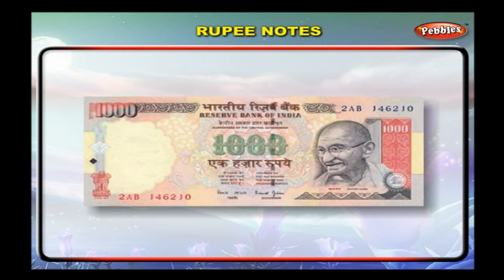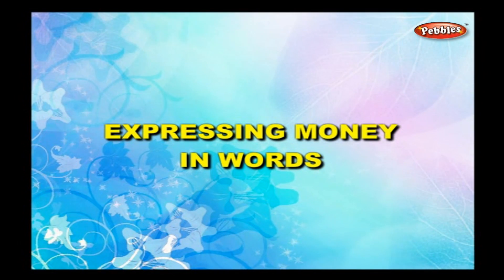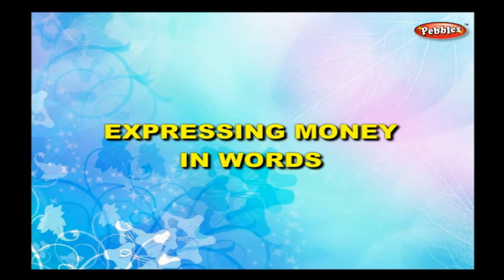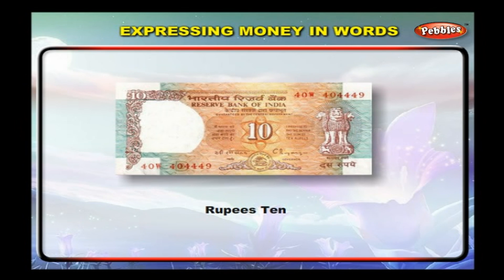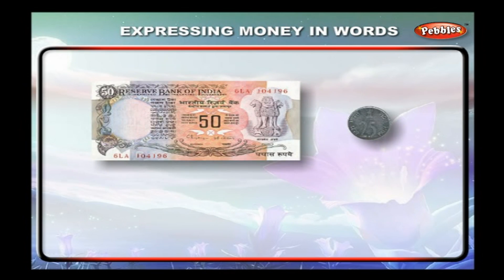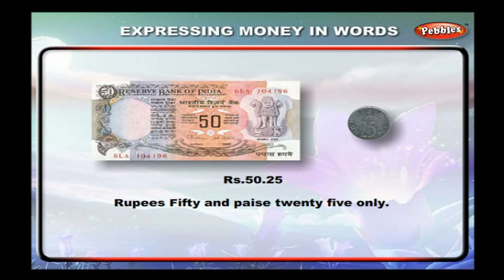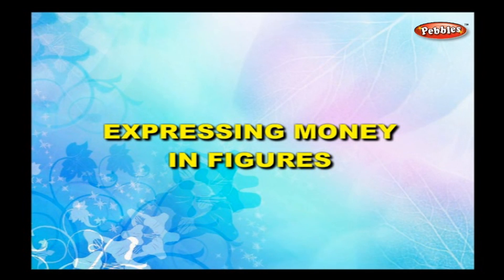Expressing money in words: rupees 10 is written in figures as Rs. 10 and in words as 'rupees ten.' Rupees 50.25 is written in figures as Rs. 50.25 and in words as 'rupees fifty and twenty-five paisa only.'